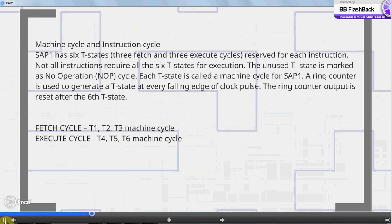Machine cycle and instruction cycle: SAP-1 has six T-states, three fetch and three execute cycles reserved for each instruction. Not all instructions require all the six T-states for execution. The unused T state is marked as no operation NOP cycle. Each T-state is called a machine cycle for SAP-1.